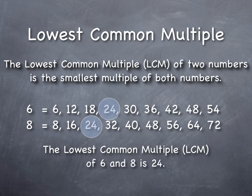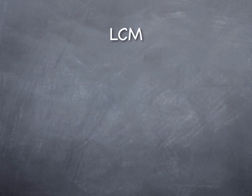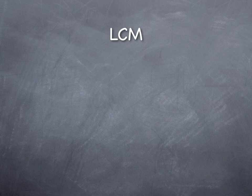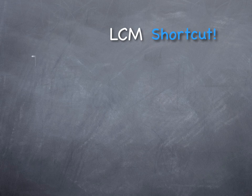So lowest common multiple of six and eight is twenty-four. Now, is there a way to do that a little bit shorter instead of having to list out every multiple of some numbers? Absolutely, there's a shortcut.